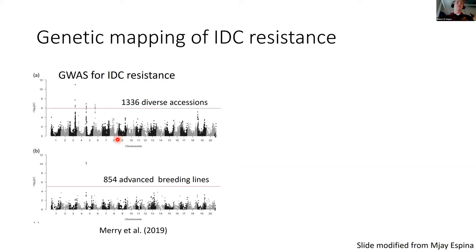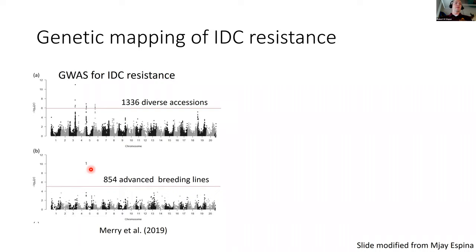This work dates back to Jim Orff's time and his student Carl Butenhoff, who were doing GWAS and bi-parental mapping for IDC within a Fiskeby III by Mandarin Ottawa population. Aaron Lorenz's group scaled up the GWAS analysis, looking at both diverse accessions and advanced breeding lines. An interesting result: in diverse accessions including landrace lines, you see QTL on chromosomes 3, 5, and 6, but in advanced breeding lines only chromosome 5 hits. Jim Orff had told me early on that the chromosome 3 QTL is too detrimental in landrace backgrounds and gets selected out of breeding populations — and sure enough, chromosome 5 was the only significant hit, so that's the one we pursued.